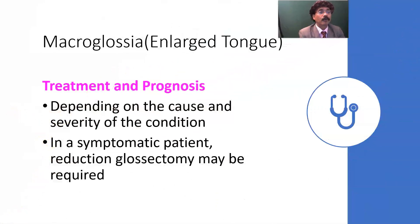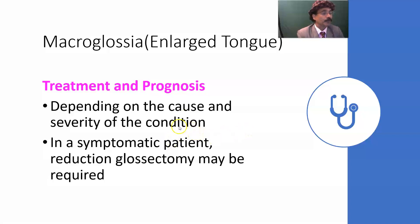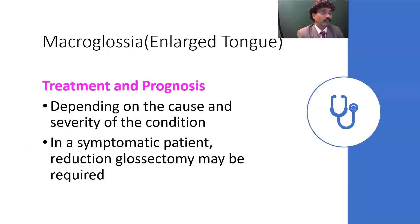Treatment depends on the cause. In case of hypothyroidism in adults, we can manage it by giving thyroxine, or it may even be prevented in children by giving thyroxine. If it is a tumor, the tumor should be removed. Depending on the cause and severity, the treatment and prognosis vary. In symptomatic patients, reduction glossectomy — where part of the tongue is surgically excised — may be required under certain circumstances to protect the respiratory system.